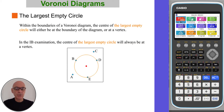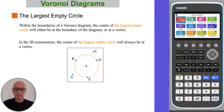Within the boundaries of a Voronoi diagram, the centre of the largest empty circle will either be at the boundary of the diagram or at a vertex. In the IB examination, the centre of the largest empty circle will always be at a vertex, as shown here in this diagram.